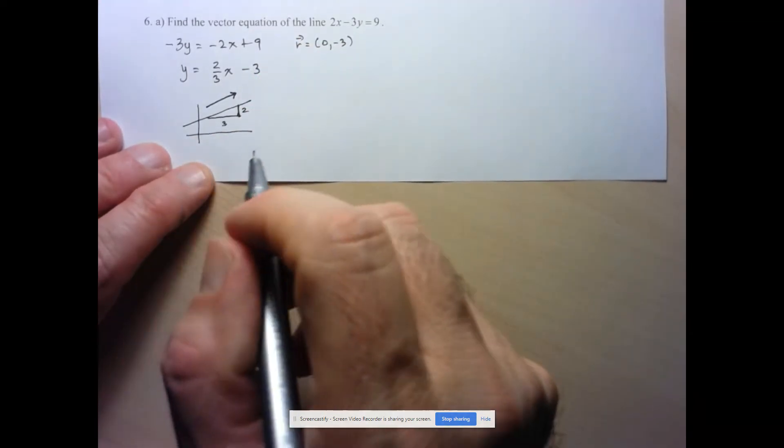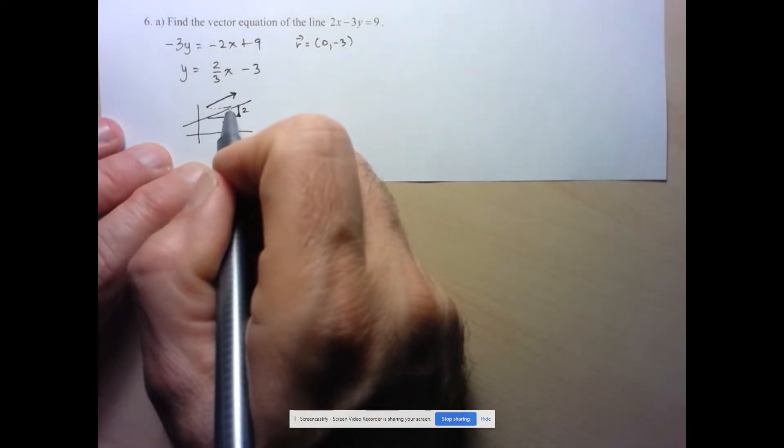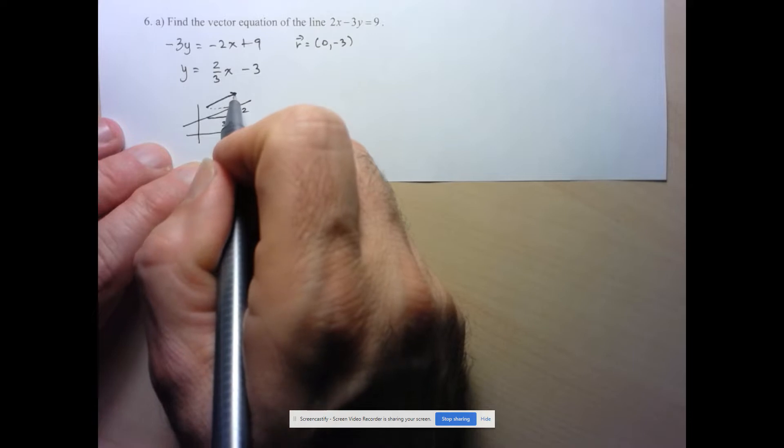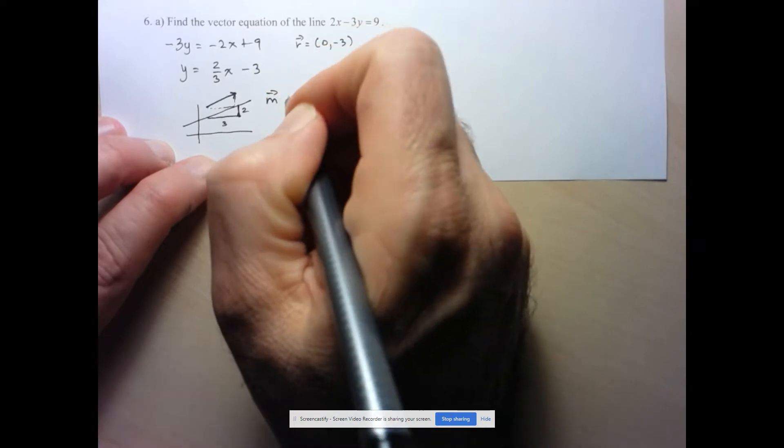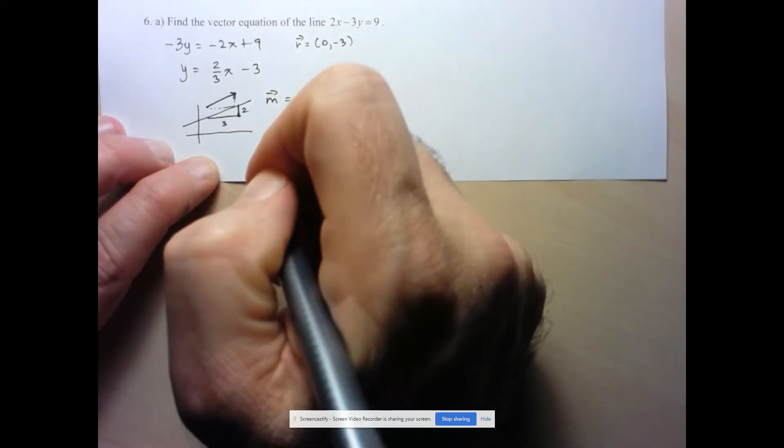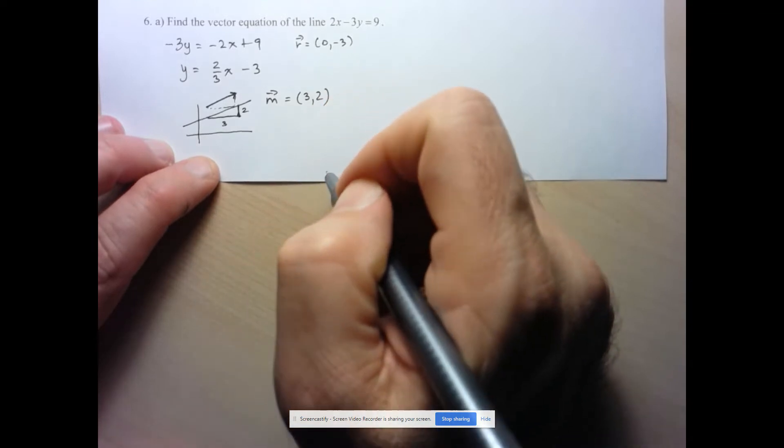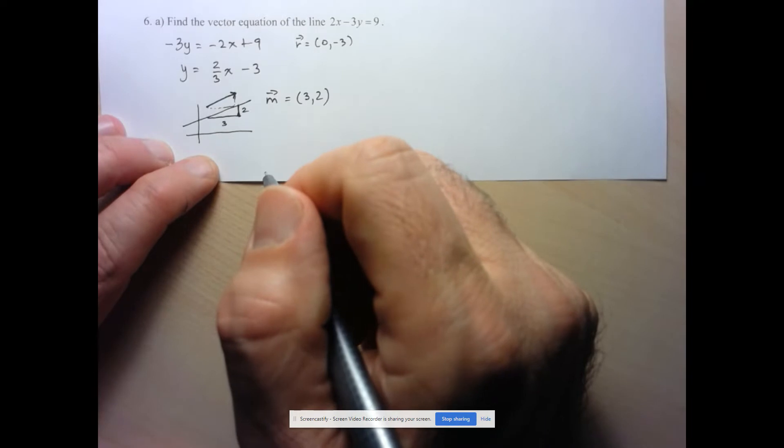So essentially what I'm looking for is I'm looking for a vector that has that exact same property, that goes in the exact same direction. In other words, I'm looking for the vector that has an x component of 3 and a y component of 2. So I realize here that my direction vector is just given by 3, 2. But now that I have a point and a direction vector, I can write out the vector equation of the line.